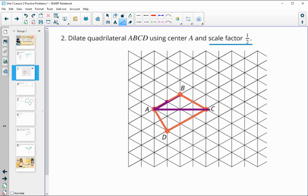Then if we look at A to C, we see it's this far, and so we're going to cut that in half. So it's going to go to right here. Here's where our new point C would be.